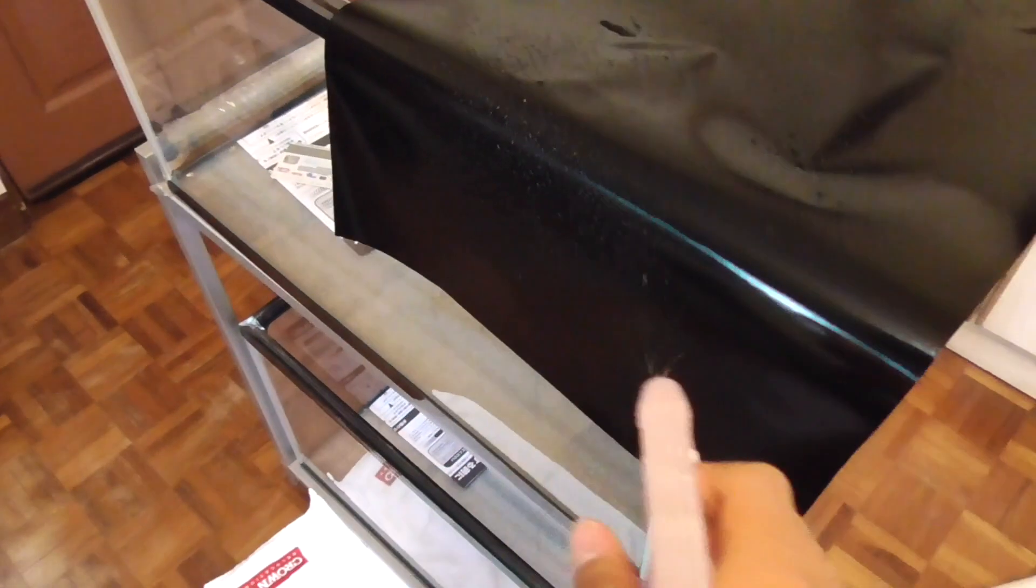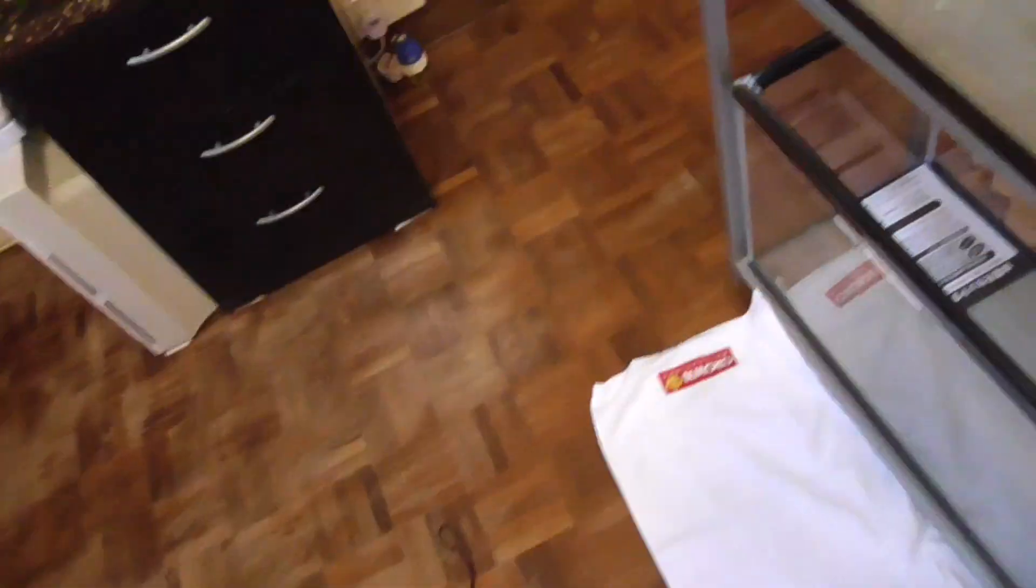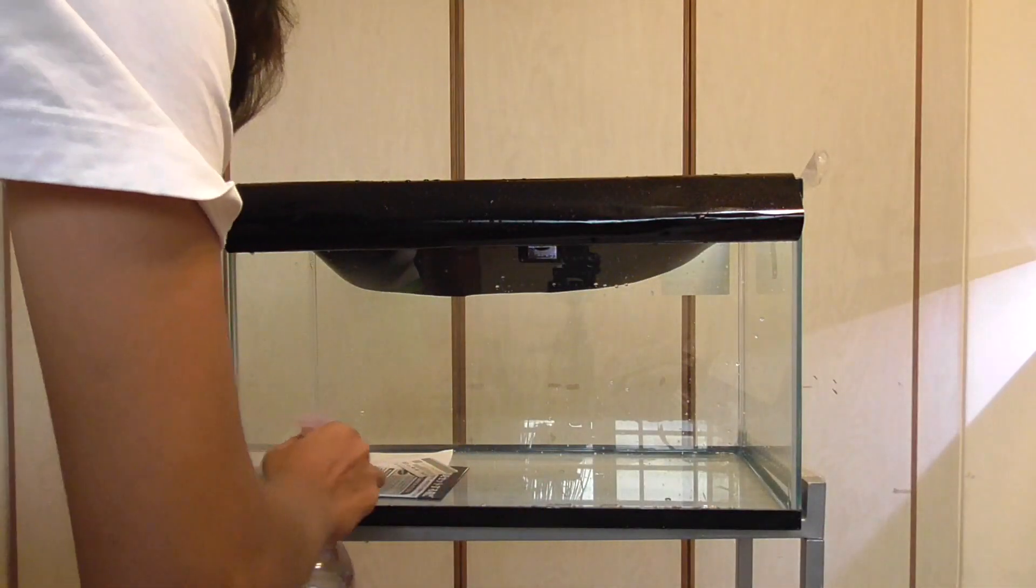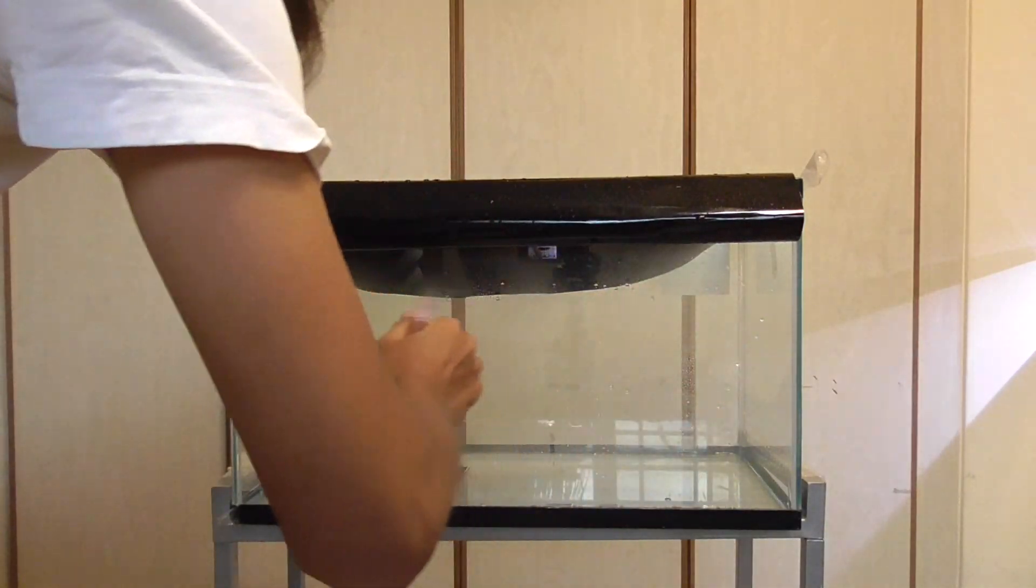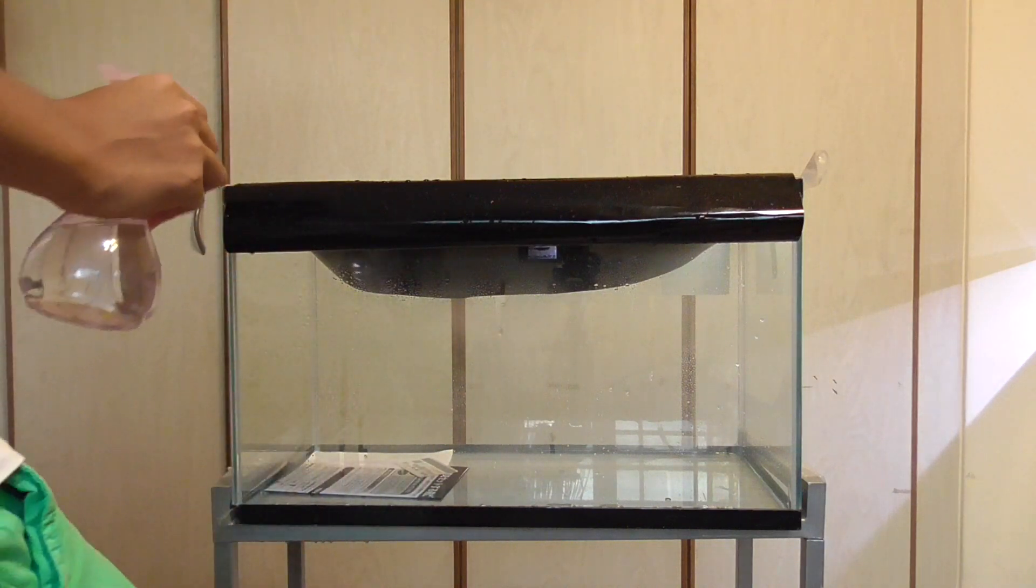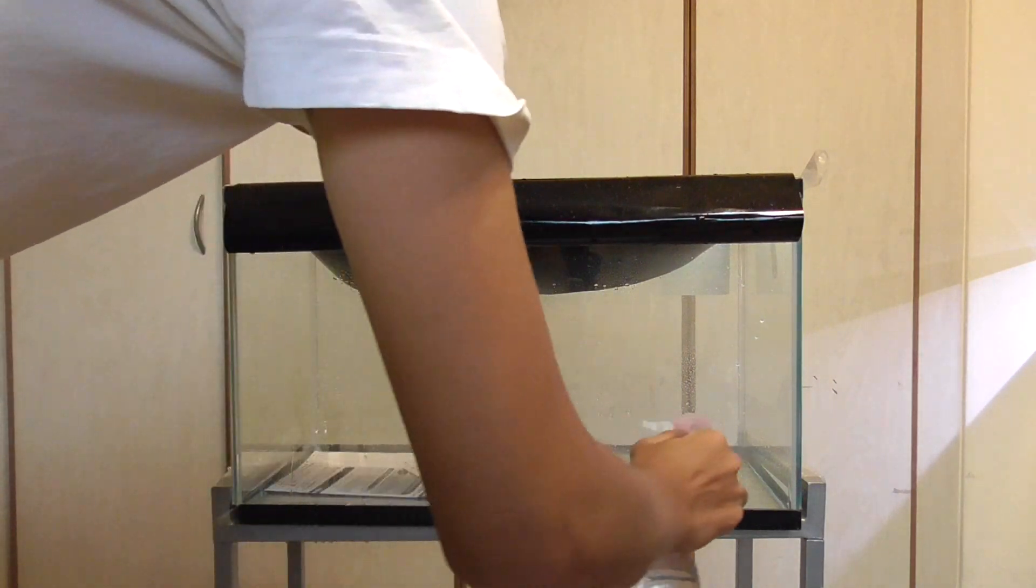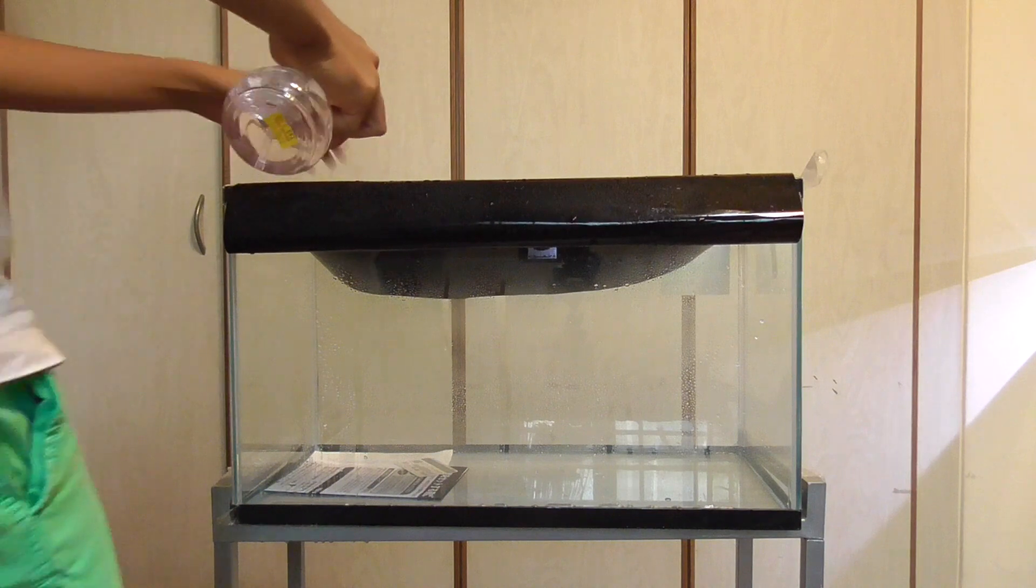Then you want to use your spray bottle and spray the sticky side. And you also want to spray your tank. Spray as much water as you want. Don't be afraid. This will prevent your sticker from sticking together. As you can see, I'm spraying a lot of water on my sticker and my tank.